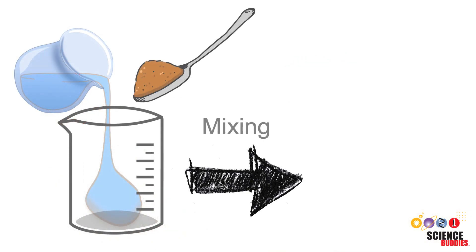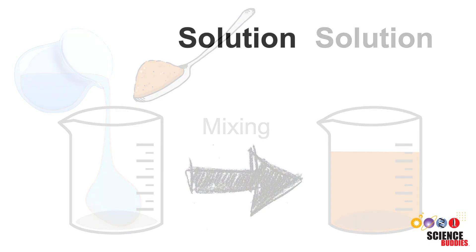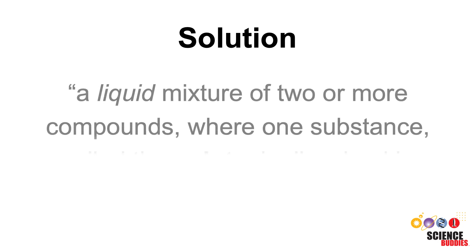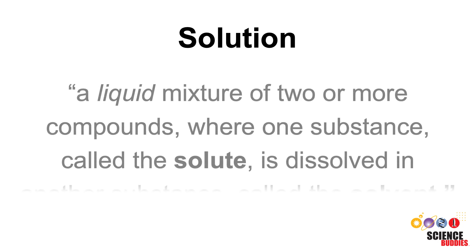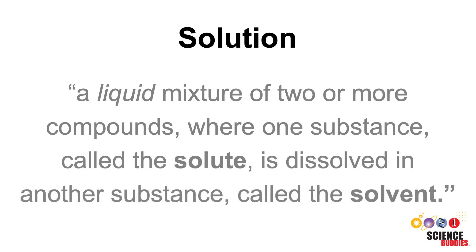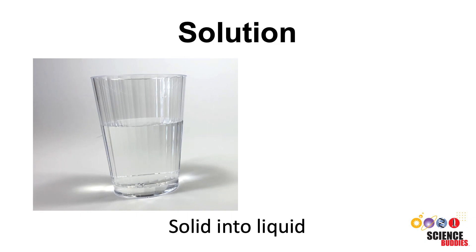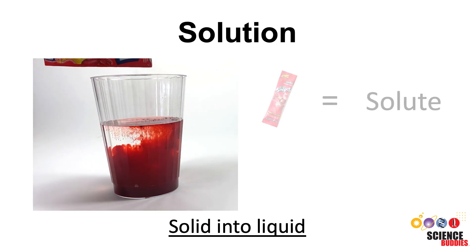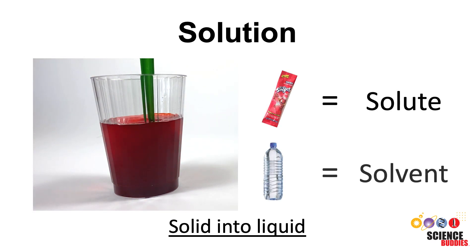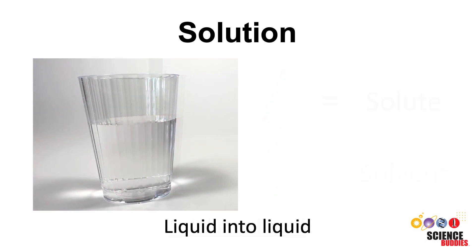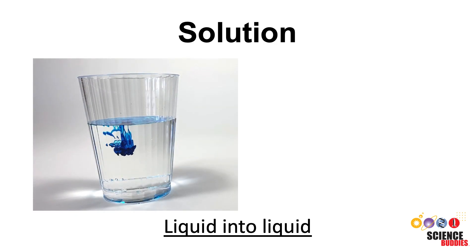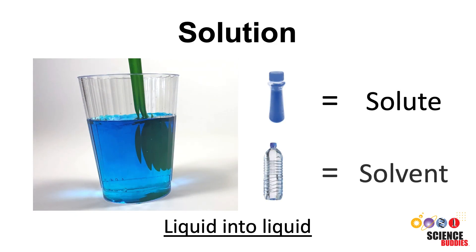Making a solution simply means mixing different compounds. A solution is defined as a liquid mixture of two or more compounds where one substance called a solute is dissolved in another substance called the solvent. Solutions can be made by dissolving a solid into a liquid, like this kool-aid powder in water — in this example the kool-aid is the solute and the water is the solvent. Solutions can also be made by dissolving one liquid into another, like this blue food coloring dye in water — in this example the blue dye is the solute and the water is the solvent.